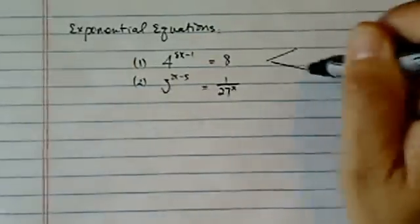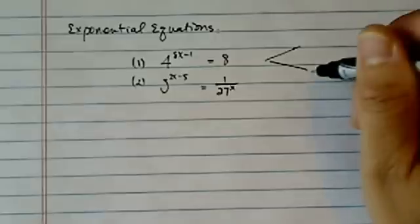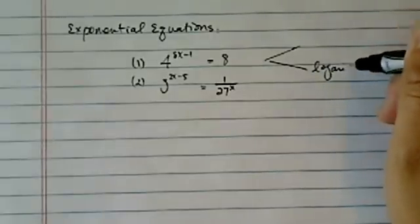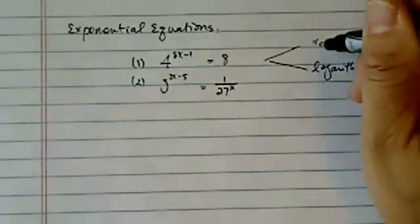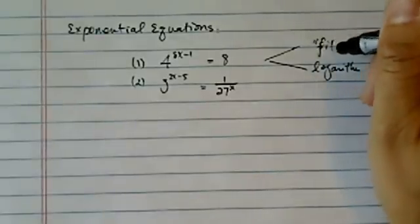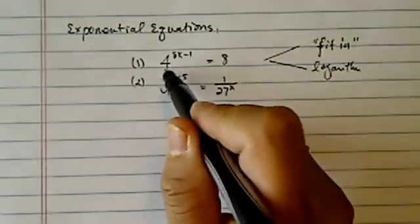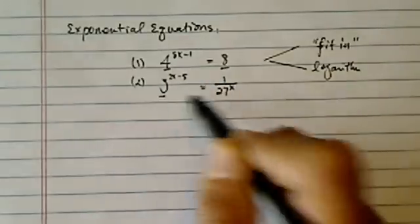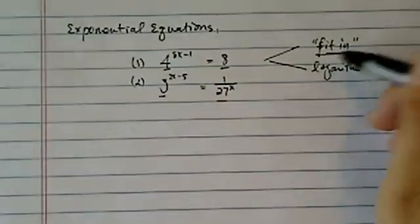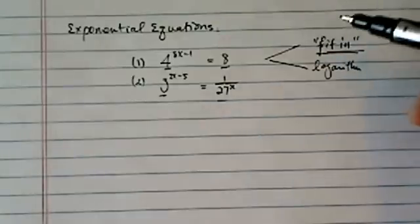There are two ways to solving exponential equations. Logarithm is one way, and then the other one is what I call fit in. The rule of thumb is if the numbers at all have any relation with each other, you want to try to fit in, and we'll explain what fit in is.